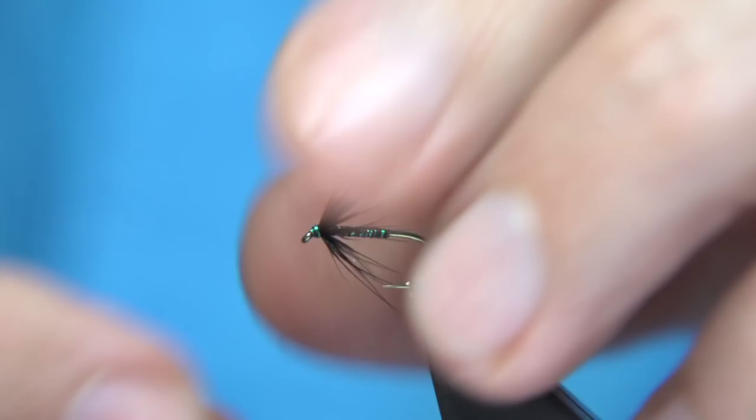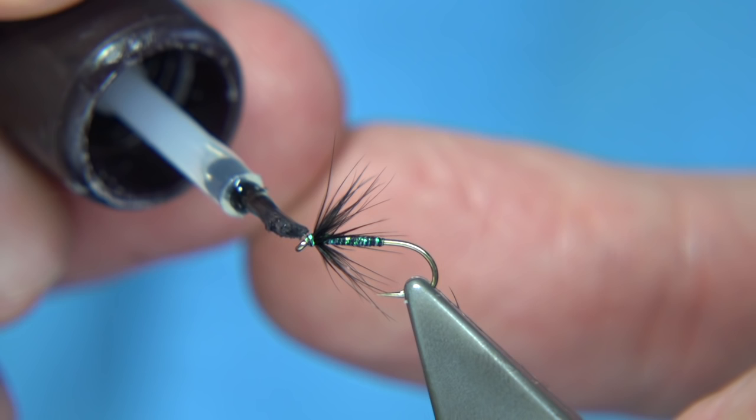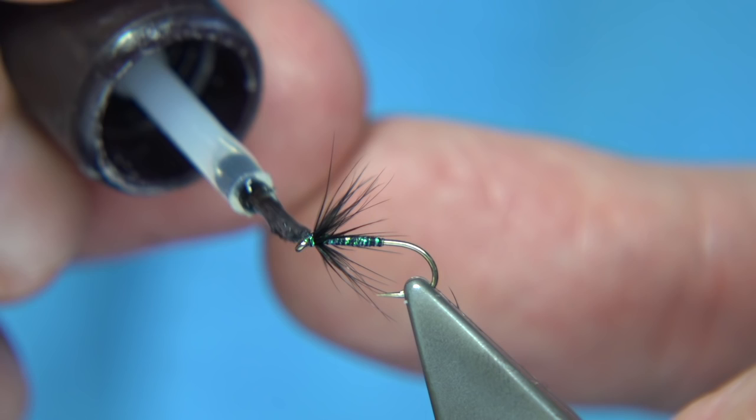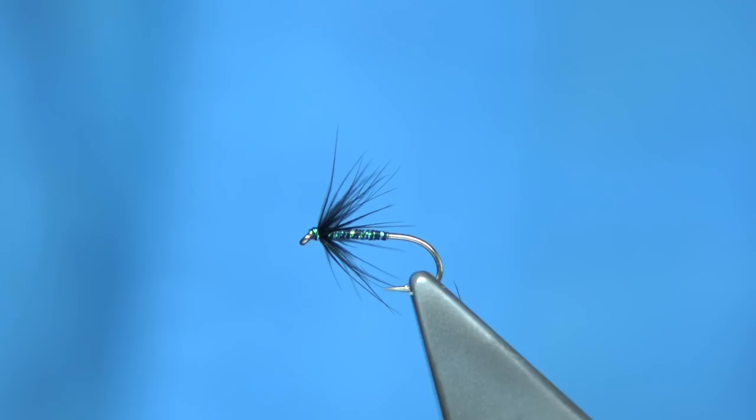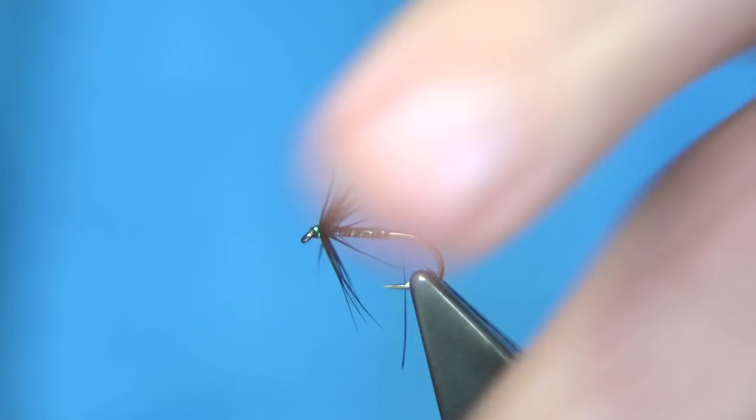Now, a touch of my varnish just in the head. Just be careful you don't touch the fibers of your hackle. Just allow that to soak in. Let me use my dubbing needle here just to clean the eye. Just take away the excess. Make sure the eye is clean. And that's the small, basically the peacock or micro glint body in the black hen hackle. Simple spider pattern.